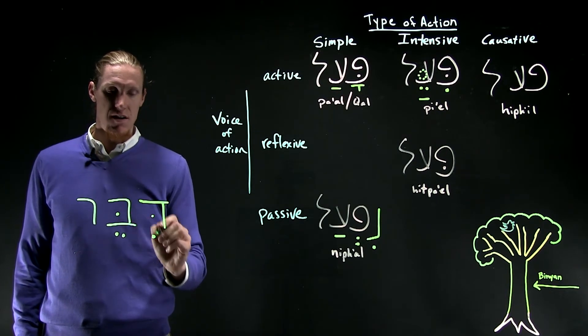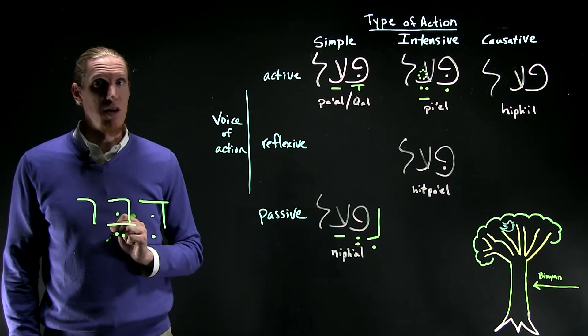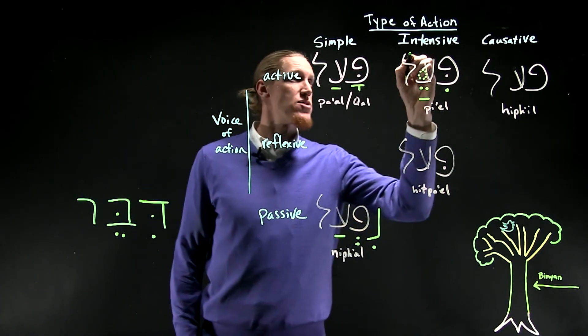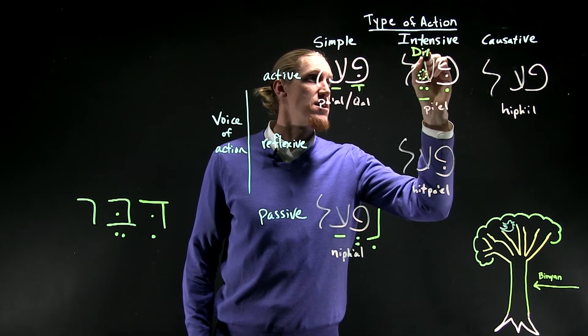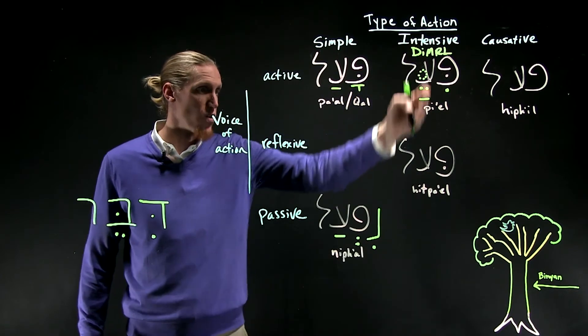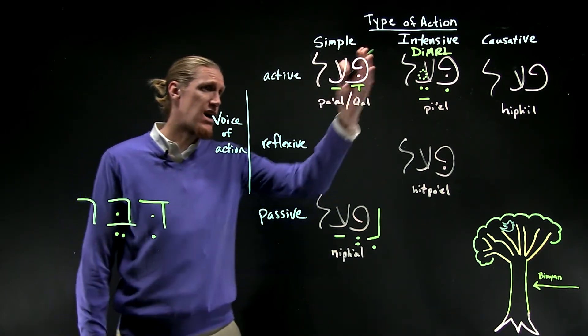So you can see e-ay, the vocal sign. The dagesh in the middle root letter is the visual sign. I like to refer to that as DIMROL. Dagesh in middle root letter. And that works for all verb stems in the intensive column here.